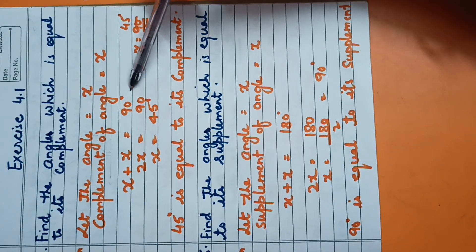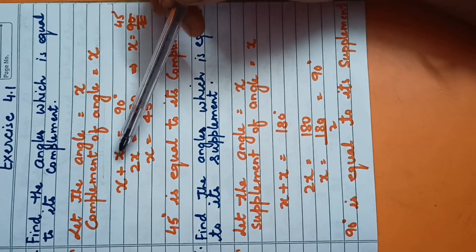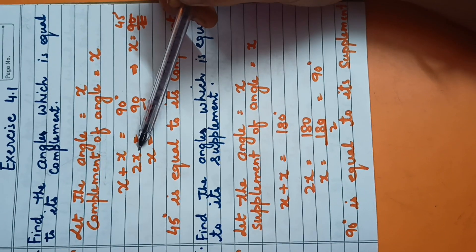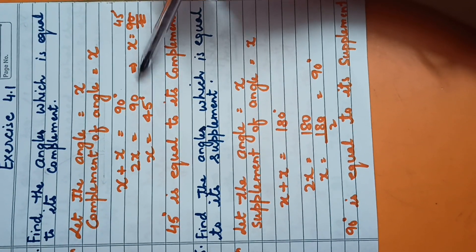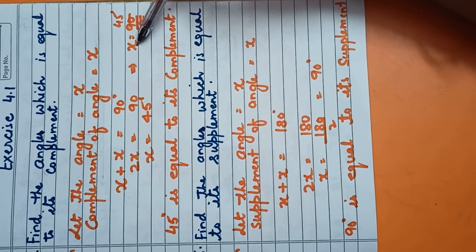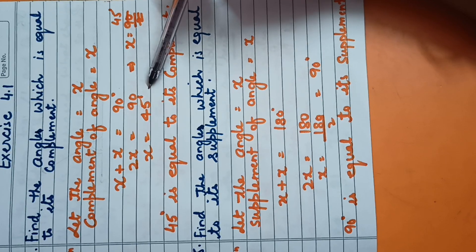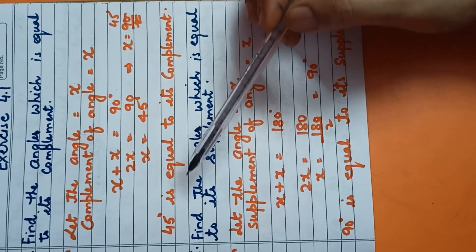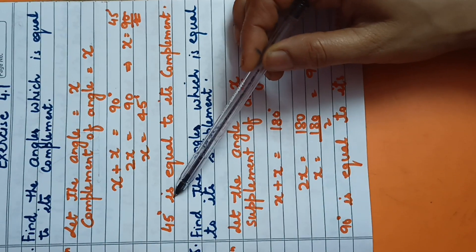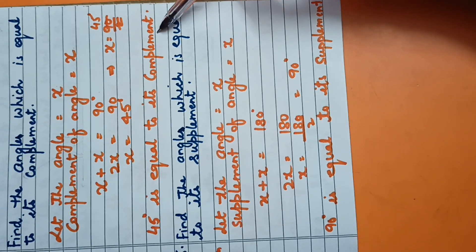Sum of these two is equal to 90 degrees, as complementary angles always sum to 90 degrees. So, x plus x gives 90 degrees; x plus x is 2x equal to 90 degrees. Then x equals 90 divided by 2, which is 45 degrees. So, 45 degrees is the angle equal to its complement.